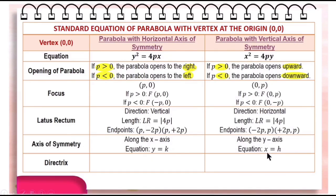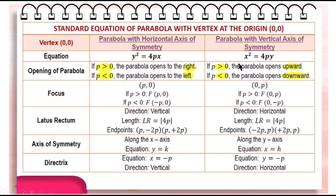So for the directrix: if the equation is quadratic in y, the equation of the directrix is x = −p; and if it is quadratic in x, the equation of the directrix is y = −p. Also remember: when p is positive, the value in the directrix equation is negative, and when p is negative, the value in the directrix equation is positive. Let us have some examples.